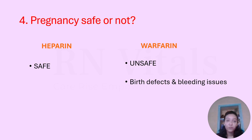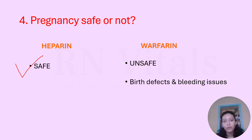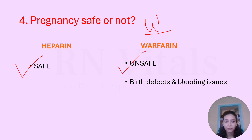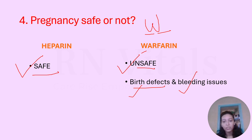The fourth and final point is pregnancy safety. Heparin is pregnancy-safe, while warfarin is unsafe. A simple way to remember: warfarin has two U's — think 'unsafe.' Heparin is the opposite — it can be given during pregnancy without issue. Warfarin given in pregnancy can cause birth defects and bleeding problems for both the mother and the baby.